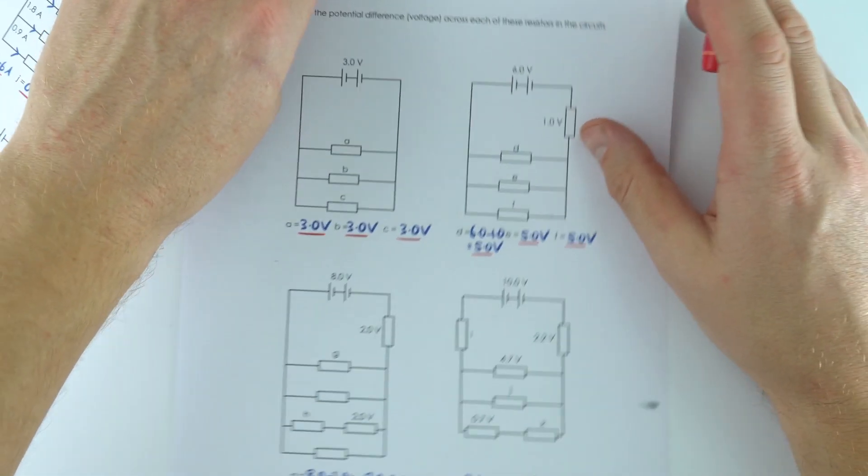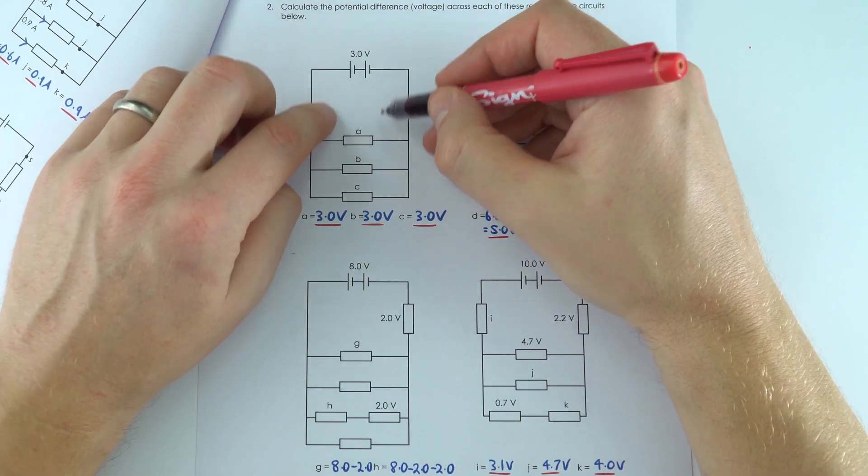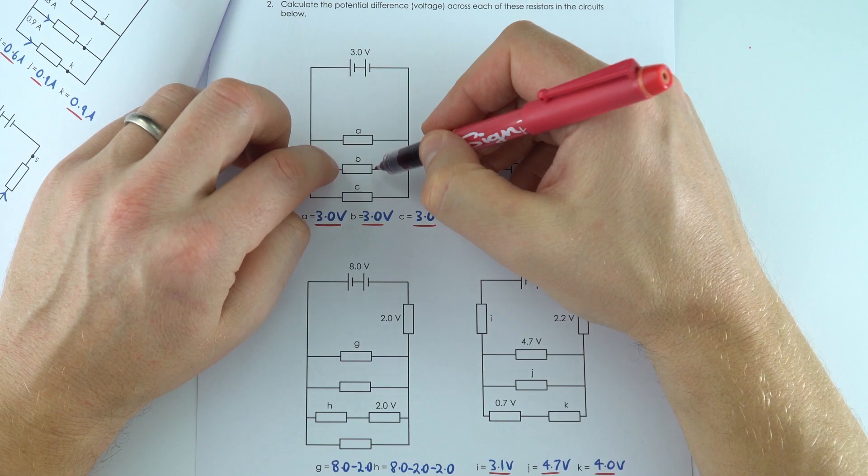It's different though when we look at potential difference. The potential difference across each loop is going to be the same. So we've got three volts where there's going to be three volts across each of these components.